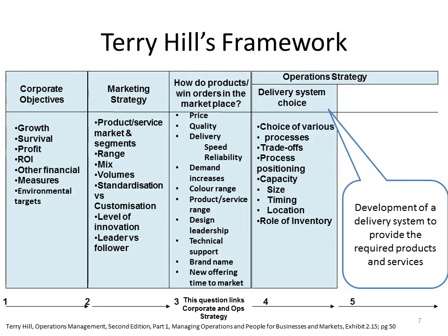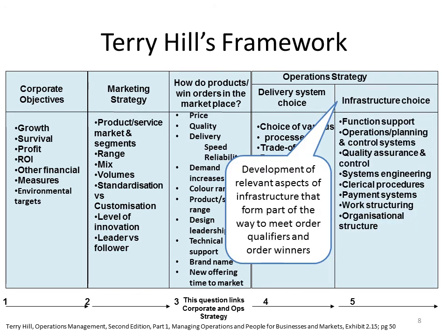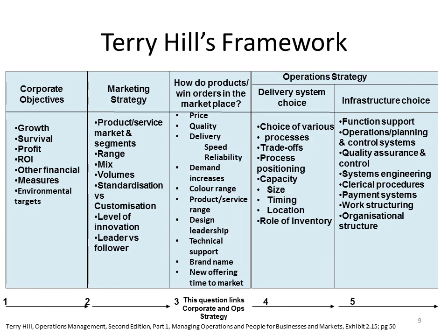Your operations strategy is split into two parts. One is the delivery system of choice — how and where you're going to provide, volume, size, timing, location, and how much inventory you're going to hold. The other is the infrastructure: what functions and systems you're going to use, how you're going to pay, who you're going to employ, and what the structure is for all of those. That's Terry Hill's framework.